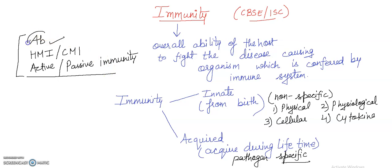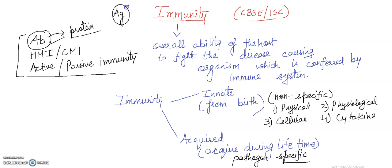In the next video I will discuss antibodies in detail. Briefly, antibodies are proteins present inside the body that fight with antigens, which are foreign particles. Antigen is represented as Ag and is the foreign agent that attacks the body, triggering antibody production. Thank you, my dear students.